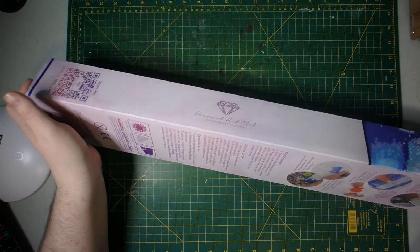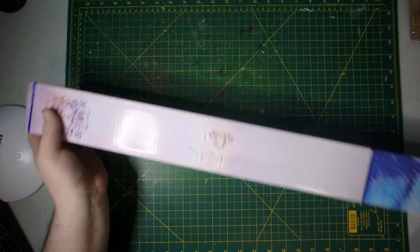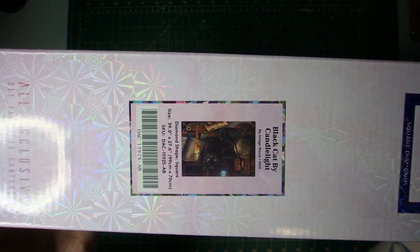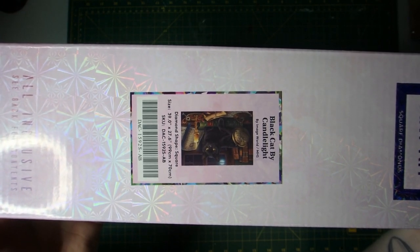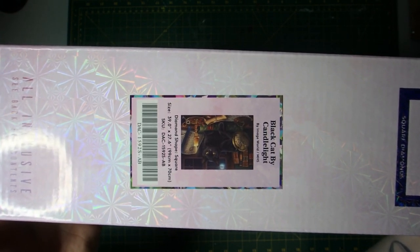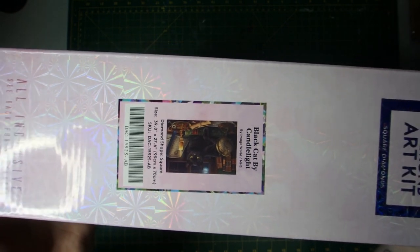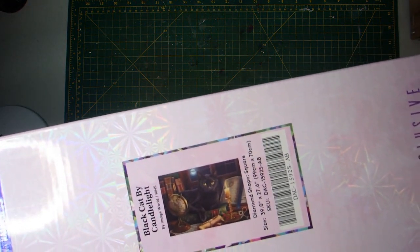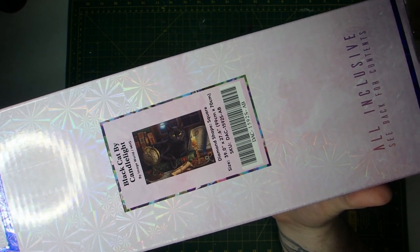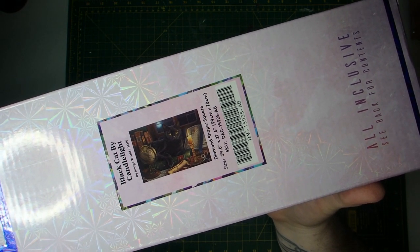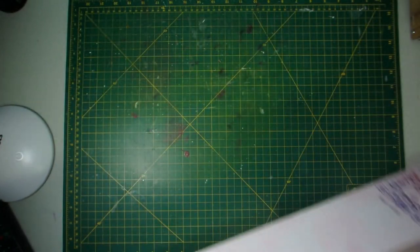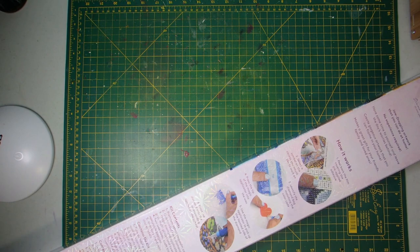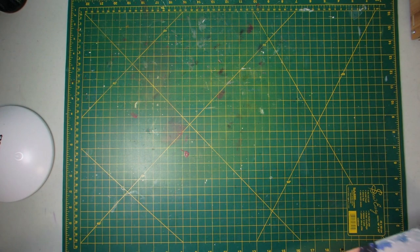We have another unboxing and today we are going to look at Diamond Art Club's Black Cat by Candlelight and this is by Indigo Worlds and MHS. The diamond shape is square and it's a 39 inch by 27.6 inch canvas or 99 centimeter by 70 centimeters, so it's quite large. It sat on my wishlist for quite some time before I finally got around to getting it.